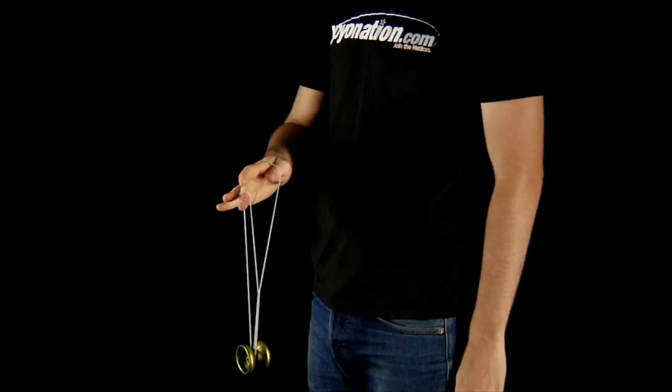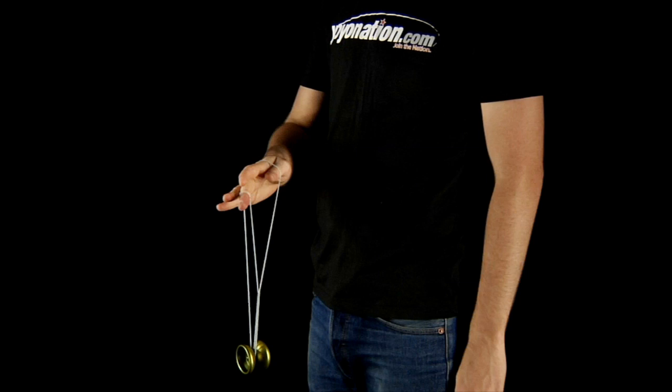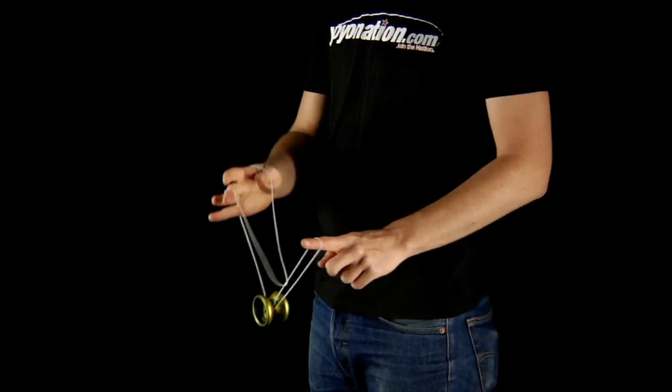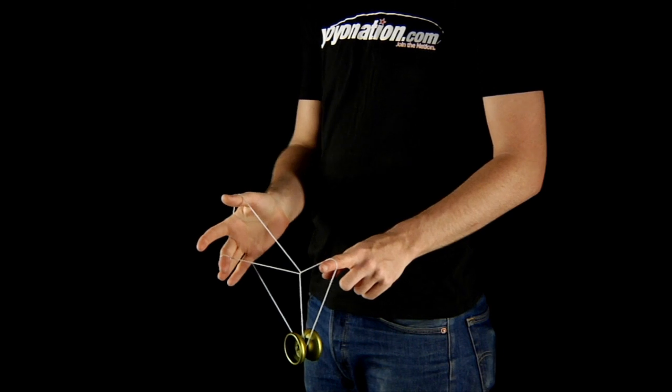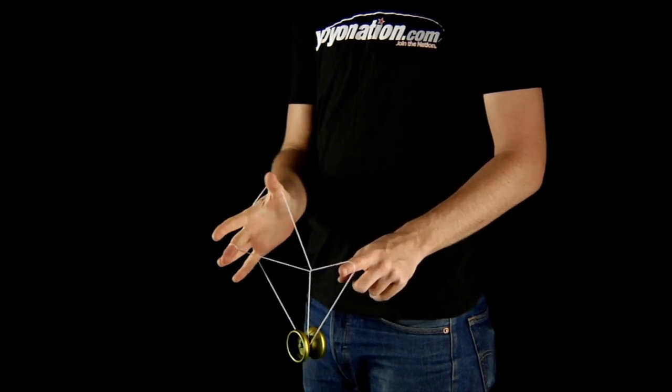Then reinsert your non-throwhand index into the mount and slide it under the other side of the yoyo. Swing the yoyo away from the mount and into the triangle made by your throwhand.